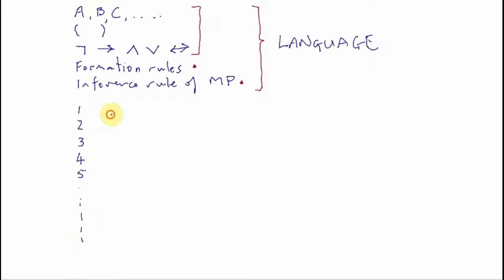And where we have some WFFs already written down, then by our inference rule of modus ponens, we are permitted to write, if we're able, depending on what these WFFs that we already have in the list happen to be, we're permitted to write others.